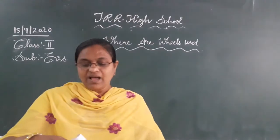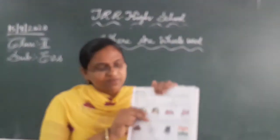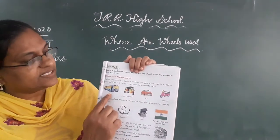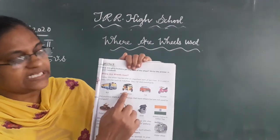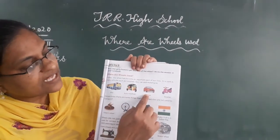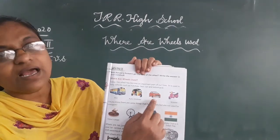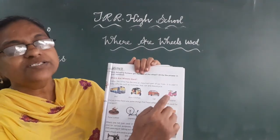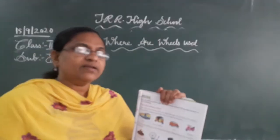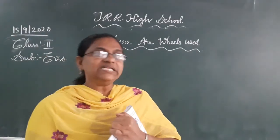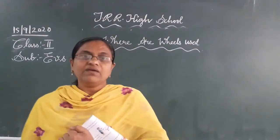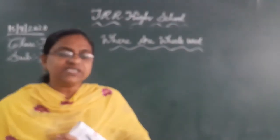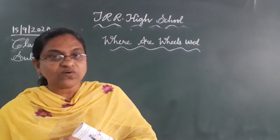I will show pictures to you. See where the wheels are used in vehicles. This is the bus, this is the auto, this is the car, and this is the scooter. Now you know wheels are used in vehicles. But wheels are also used in other things.